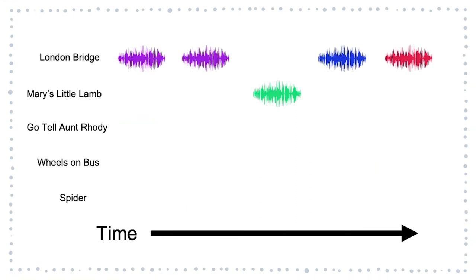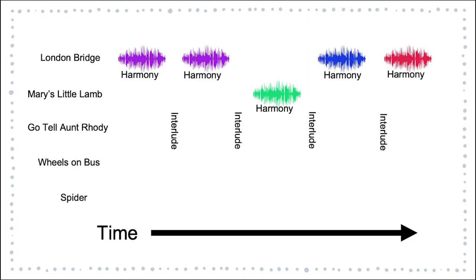It could be that you want London Bridge played twice by the same instrument, then Mary Had a Little Lamb, and then London Bridge two more times with two different instruments. The choice is yours. The possibilities are not endless because we can calculate that. Then, as in the previous slide, choosing harmonies and interludes — make it your own.